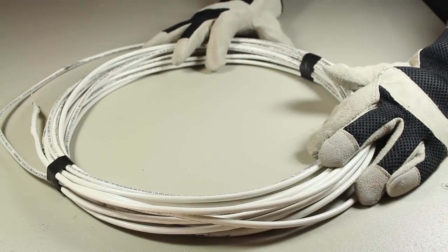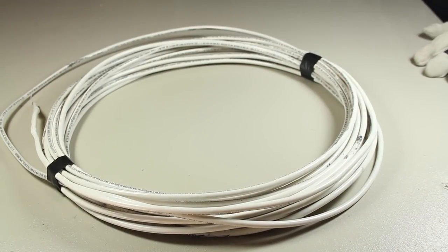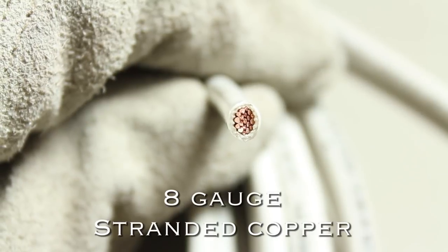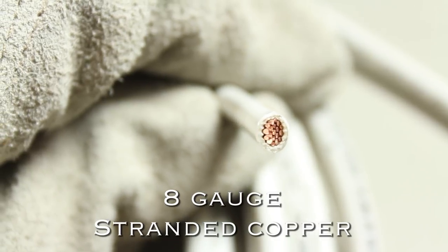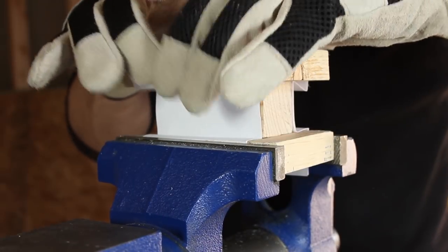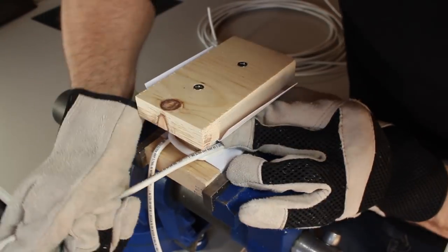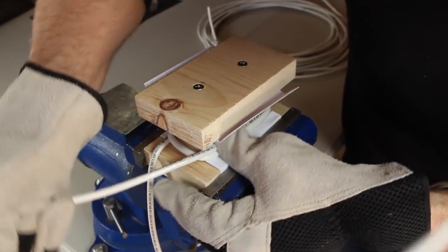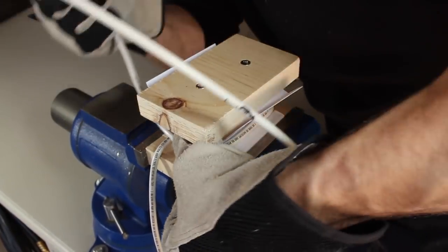I found this 50 foot length of wire on clearance at the hardware store. This is 8 gauge stranded copper wire and cost me about $17. I'm going to use my vise to hold the form in place and begin winding the cable around the center of the form as tightly as possible.